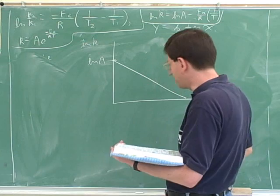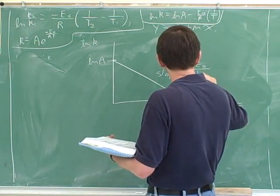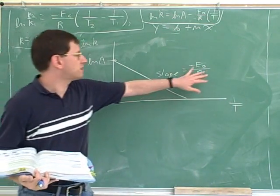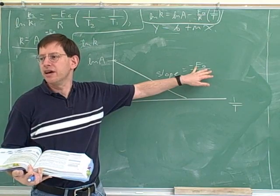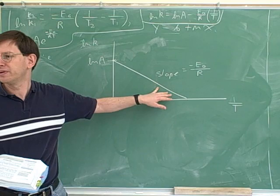So here's what we would get if we graphed this, and the slope would be negative E_A over R. In fact, that's another way to find the activation energy of a reaction. The other way to find the activation energy is to graph two points on this line and figure out the slope.